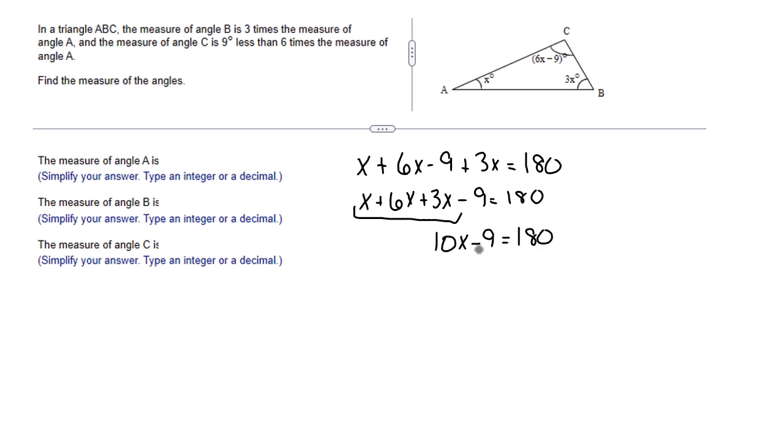Now what we want to do is to get 10 X by itself. That means I have to do the opposite of subtracting nine, which is adding nine. That gives us 10 X equals 189. But I need to get X by itself, so I have to divide by 10 on both sides. That gives me X equals 18.9 degrees.